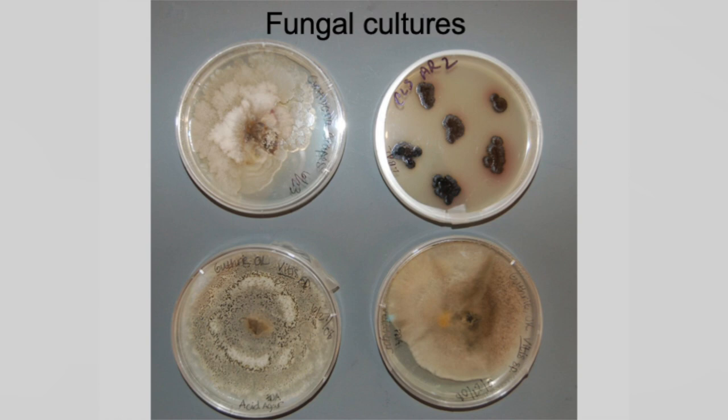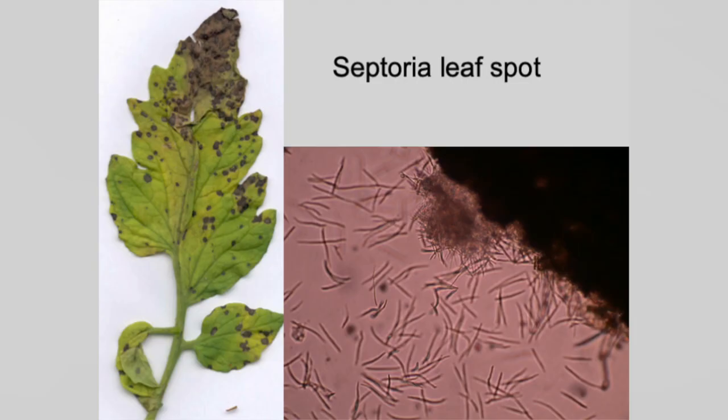These are little pieces of leaf or stem that you put on a petri plate and it grows out. This is one we have in Oklahoma mostly in the eastern part of the state around Bixby and further south: Septoria leaf spot. It looks a lot like bacterial spot — the spots are a little bigger — but when I chop those up and put them under the scope you see these little needles coming out; that's Septoria.